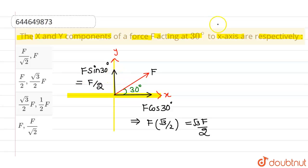So, the components to x-axis and y-axis are respectively root 3 f by 2 and f by 2. So, option 3 is correct and rest all options are incorrect. I hope you understood. Thank you.